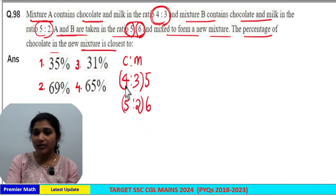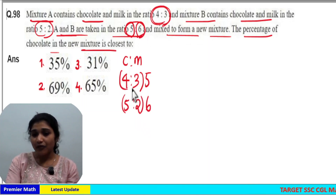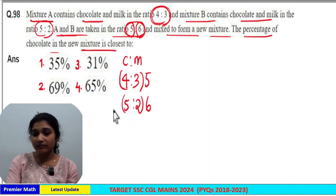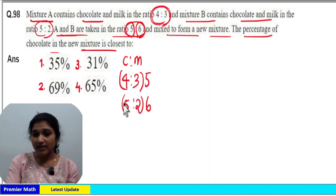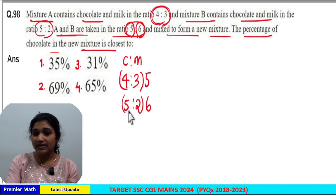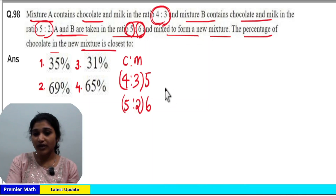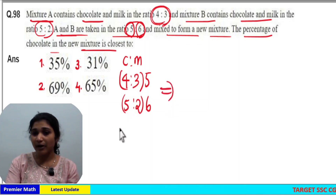Now, both the parts are equal — that is, 4 plus 3 is 7 and 5 plus 2 is 7. That means in mixture A and mixture B, the total components are equal. Since 4+3=7 and 5+2=7, there is no need to equalize the parts.